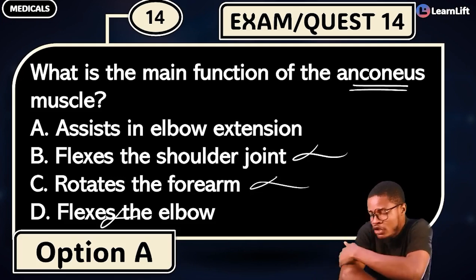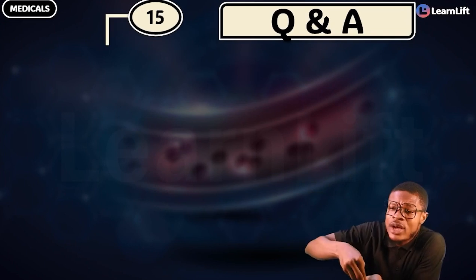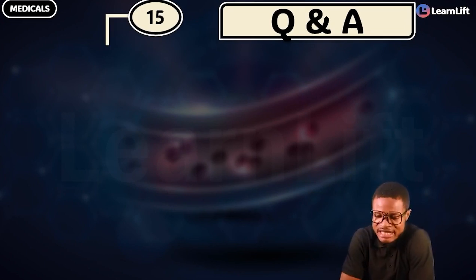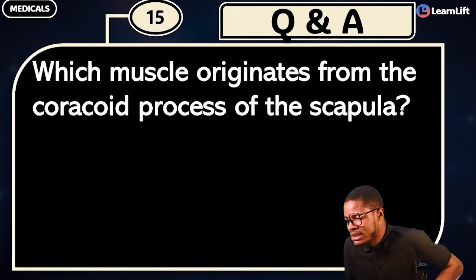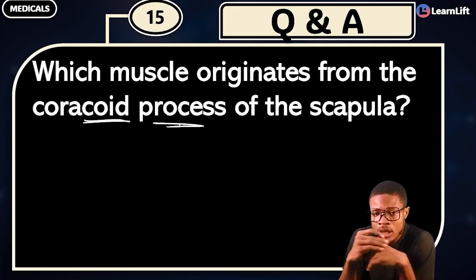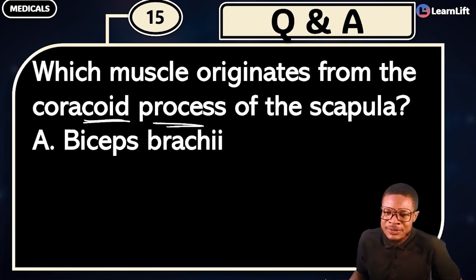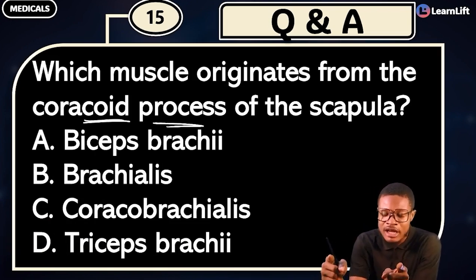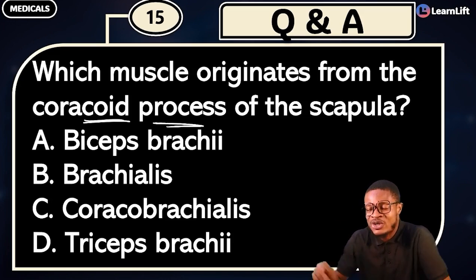Anterior compartment will flex; posterior compartment will extend. Now a bonus question: drop the answer in the comment section or Q&A segment of the app. The question is — which muscle originates from the coracoid process of the scapula? Think about it and drop your answer.